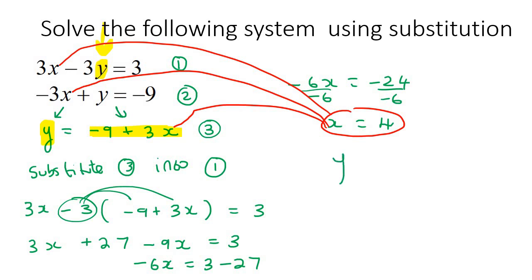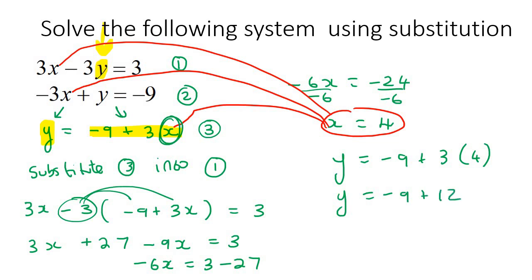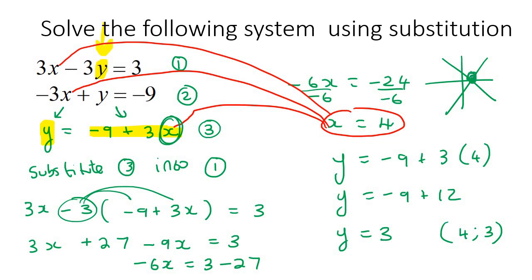So we say Y equals negative 9 plus 3 times 4. That gives Y equals negative 9 plus 12, which is 3. The final answer is X is 4 and Y is 3. If you were to draw these two lines, that is where they intersect — when X is 4 and Y is 3.